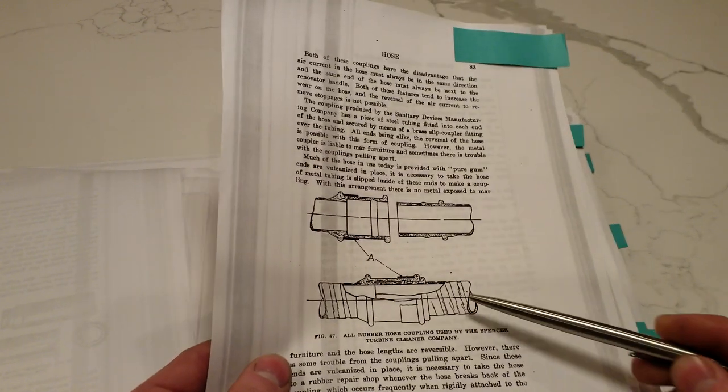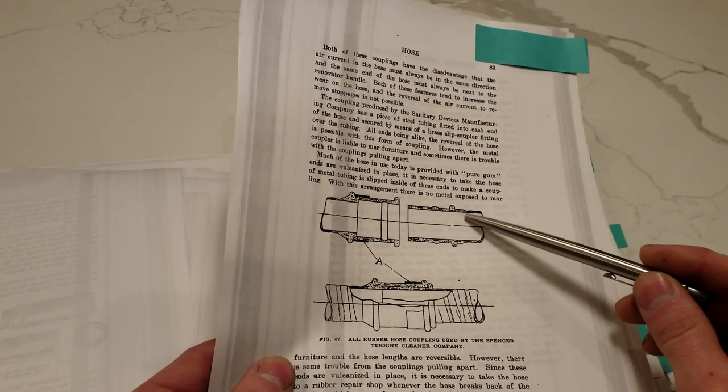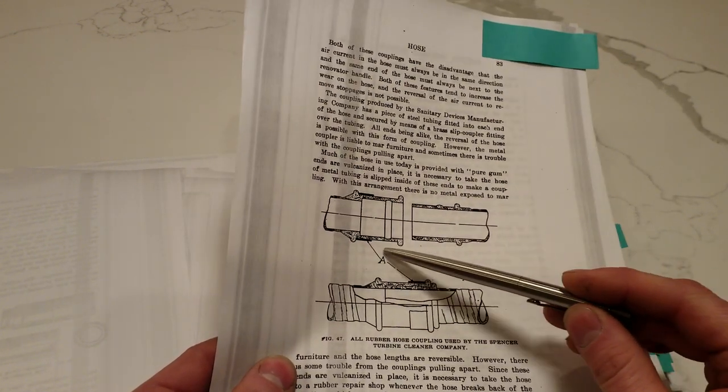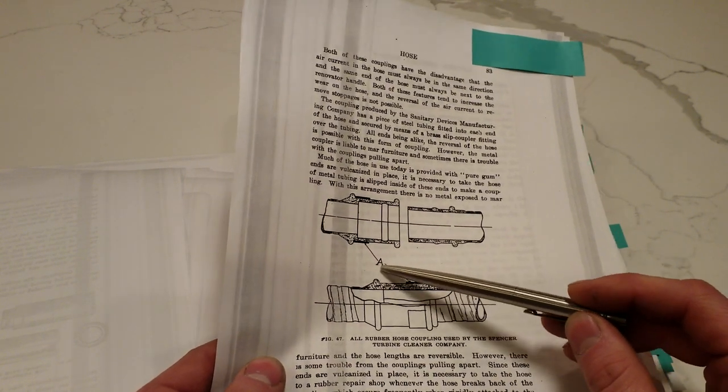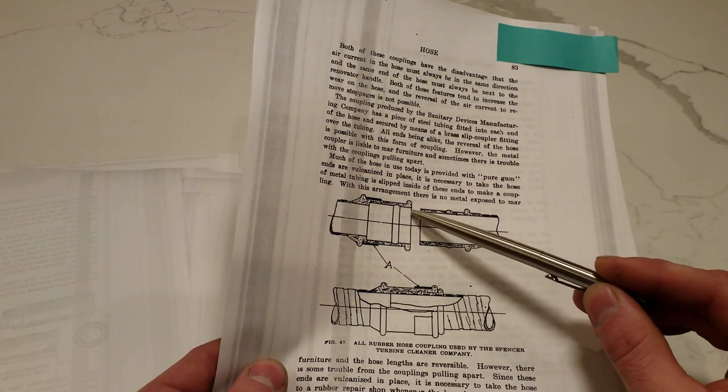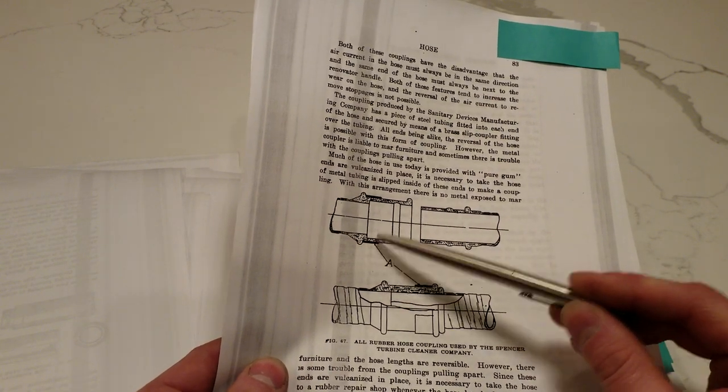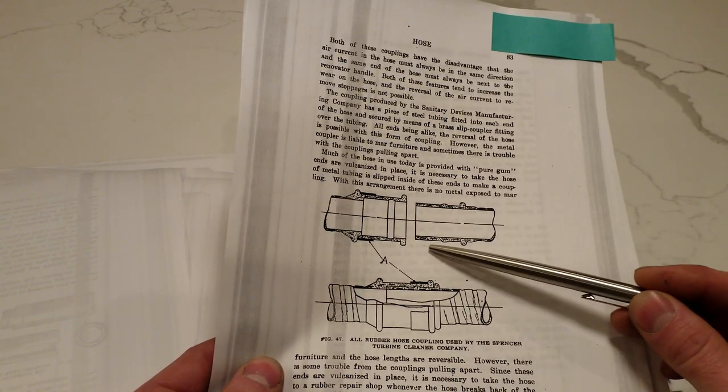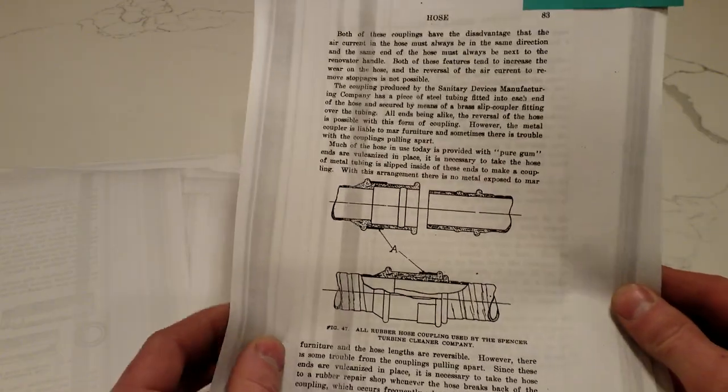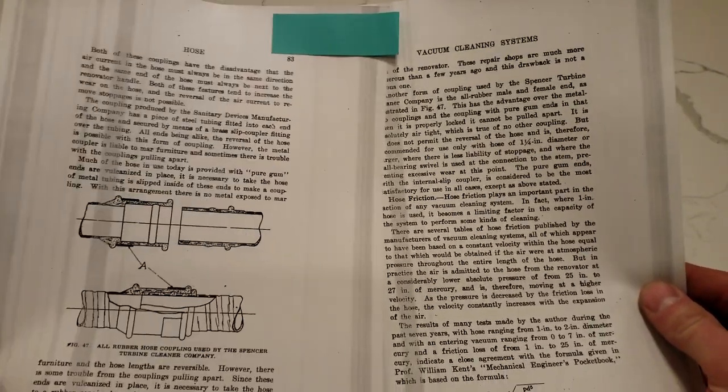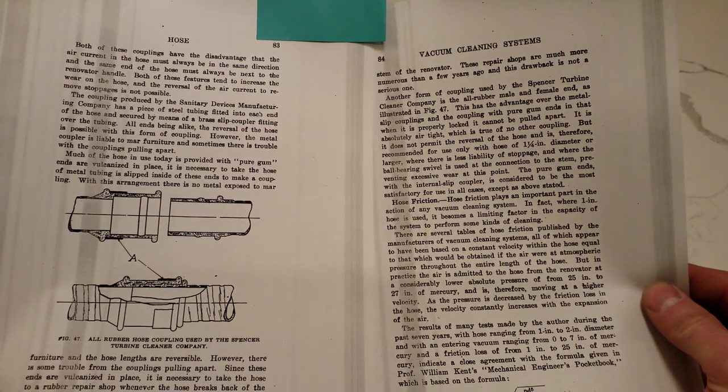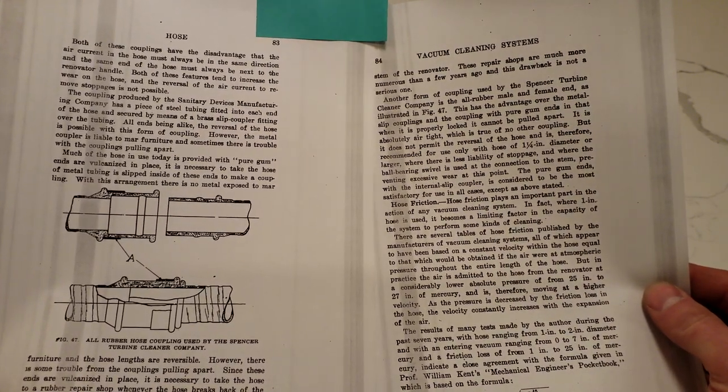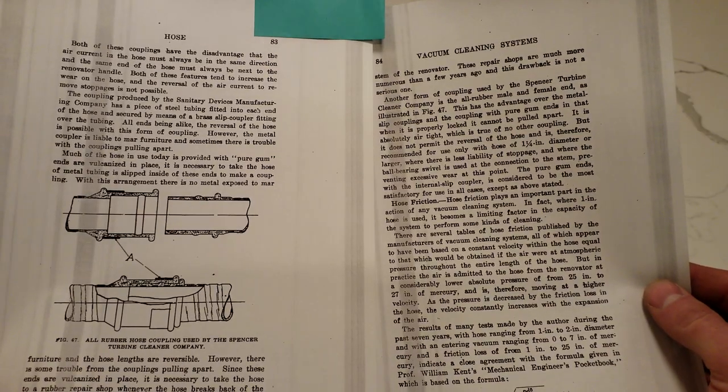There's the Spencer hose end. This is the end that you put into the wall inlet that can also be put into the tool end of another hose to lengthen them. And this is the rubber coupling with the slide lock on it that holds the other end in place. The all rubber has the advantage when it is properly locked. It cannot be pulled apart. It is absolutely airtight, which is true of no other coupling.